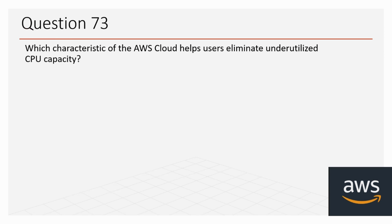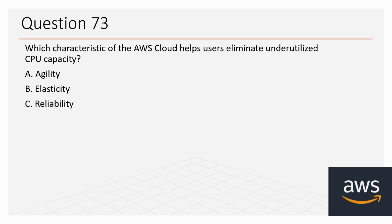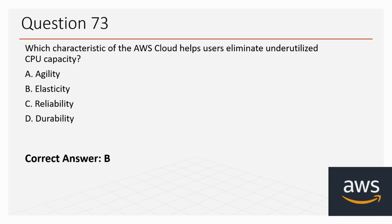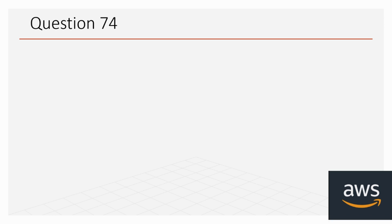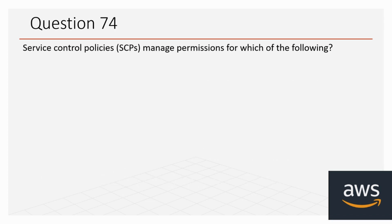Question 73: Which characteristic of the AWS Cloud helps users eliminate underutilized CPU capacity? Options: A: agility, B: elasticity, C: reliability, D: durability. The correct option is B, elasticity.